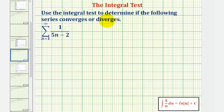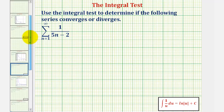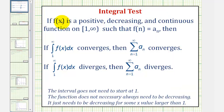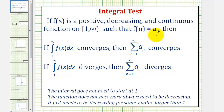We want to use the integral test to determine if the following series converges or diverges. To apply the integral test, we first want to find a function f(x) that is positive, decreasing, and continuous on the interval from one to infinity, such that f(n) equals a sub n.